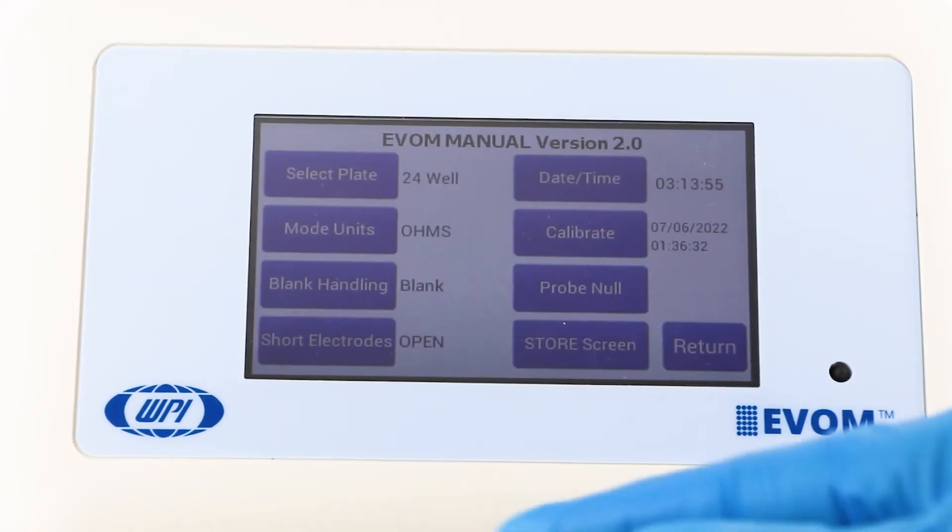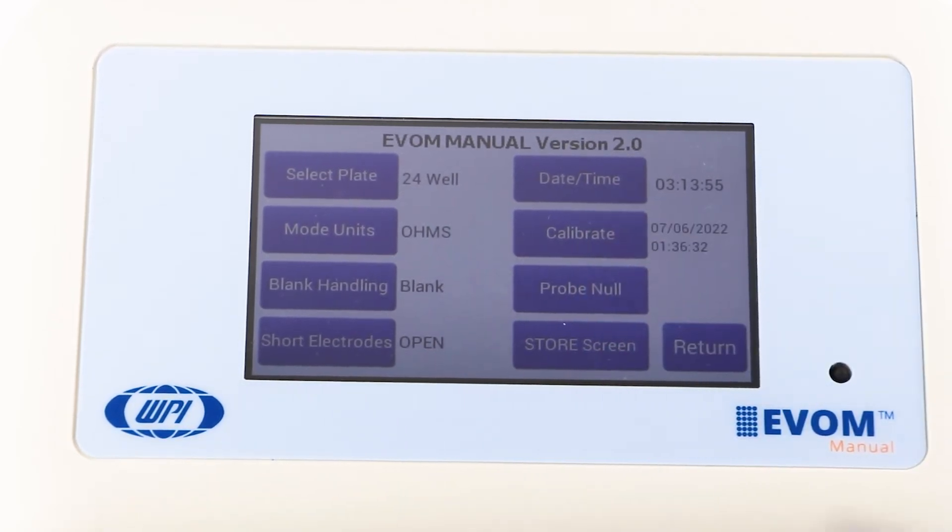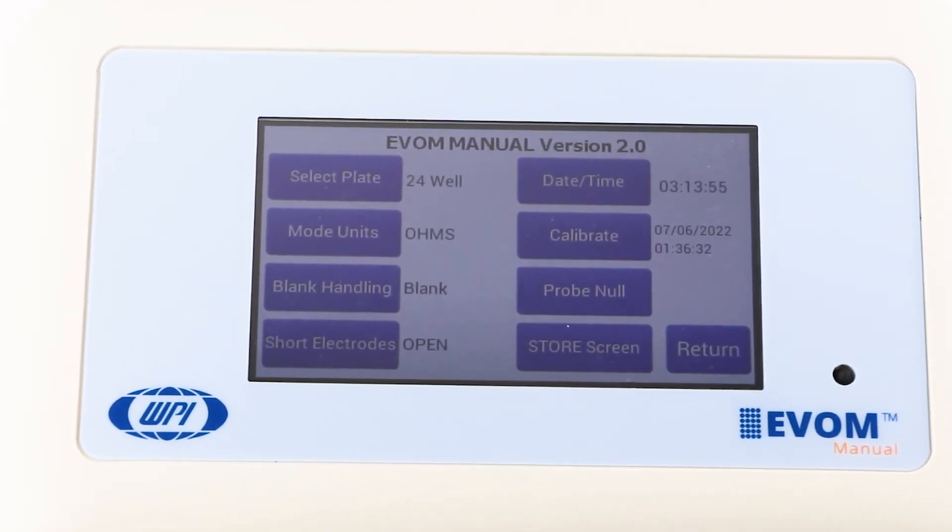You may press calibrate to calibrate the meter, since the meter uses an internal resistance to adjust the internal measurement electronics.